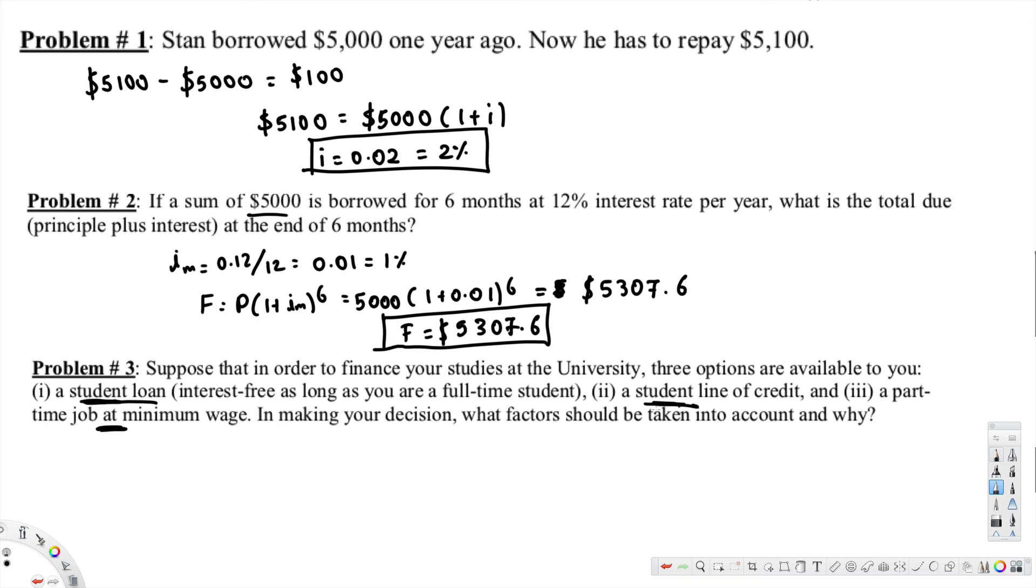But there's something called opportunity cost. If part-time job is affecting the studies, like we couldn't spend more hours studying, it's called opportunity cost. Therefore, if the opportunity cost is higher than the income, it means student loan is a better choice.